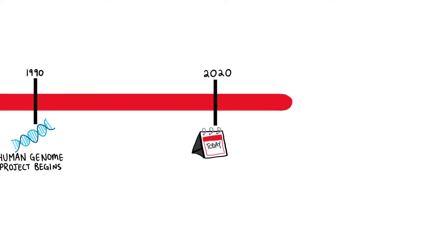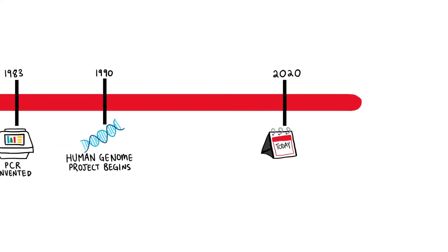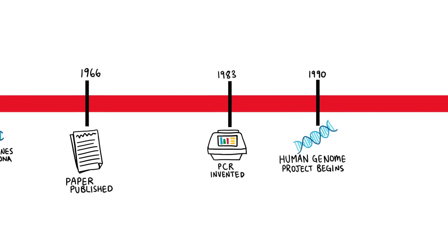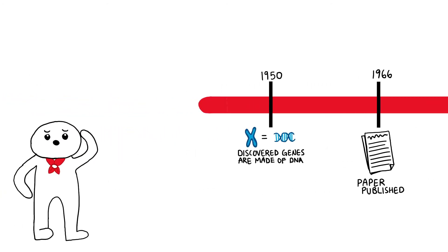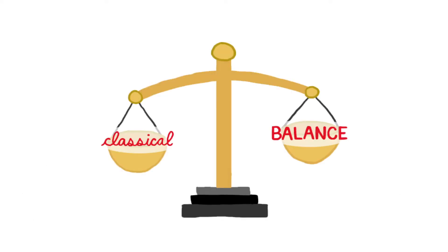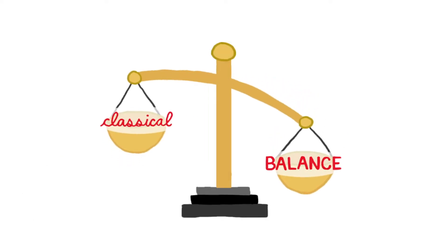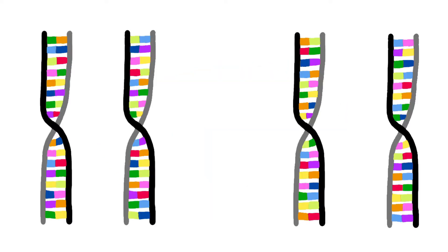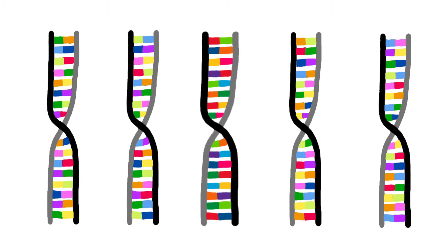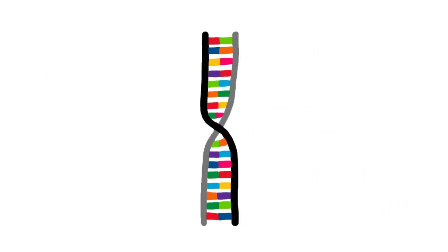Before we can truly understand the importance of these papers, we need to back up a bit. Back in the 1950s, very little was understood about the state of a gene, and most had never heard of the term genetic variation. There was strong debate over what was termed the classical view versus the balanced view of variability. The classical view believed that the wild-type version of an allele was the only one, and any changes to this were the result of rare mutations.